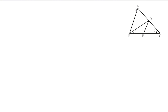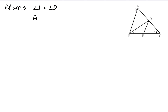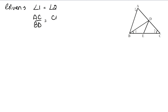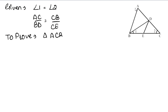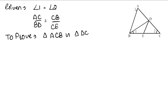चलिए देखते हैं. हमें क्या-क्या given हैं? Given है: angle 1 equals angle 2, और AC upon BD is equal to CB upon CE. और हमें proof करना है कि triangle ACB is similar to triangle DCE.